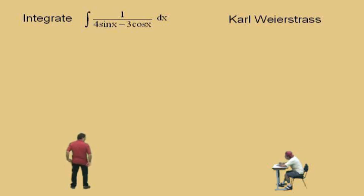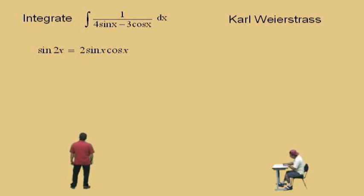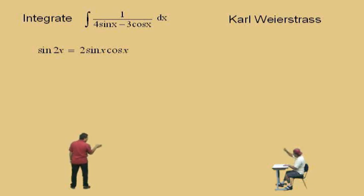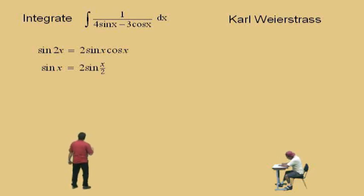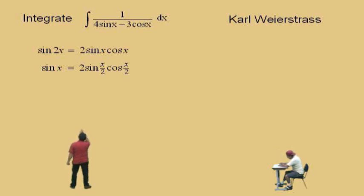First, let's do a little trig. Sine of 2x equals 2 sin x cos x — that's the double angle formula, because 2x is twice as big as x. Using that fact, sine x equals 2 times sine of x/2 times cosine of x/2. Similarly, cosine of x will involve cosine of x/2. So our form is: sin x = 2 sin(x/2) cos(x/2).